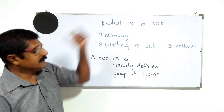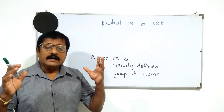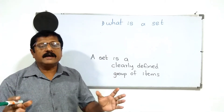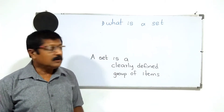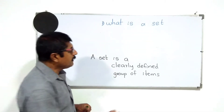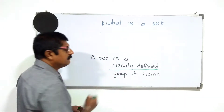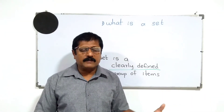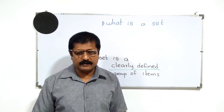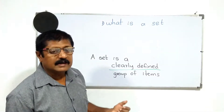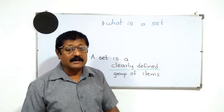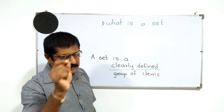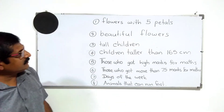What is a set? A set is a clearly defined group of objects. We can say that it is a clearly defined group of items — but what is the meaning of that? Let me give you a few examples to help you understand.